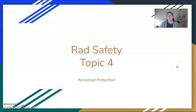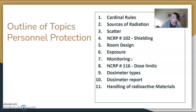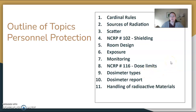We're going to start Topic 4 of RAD safety, which is personnel protection — protecting you, the technologist. Here's an outline of what we'll cover today: cardinal rules, sources, scatter, shielding requirements, room design, exposure monitoring, dose limits, dosimeter types, the report you get, and handling radioactive materials.